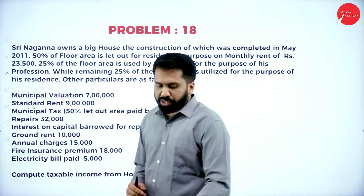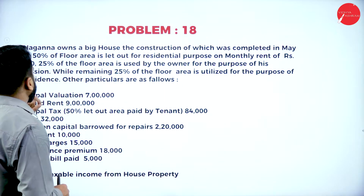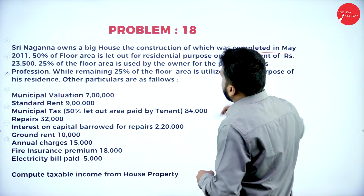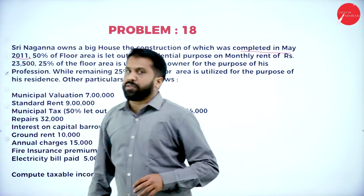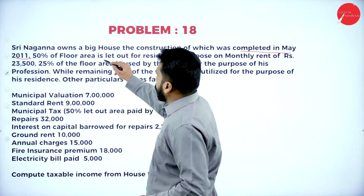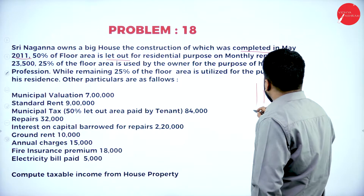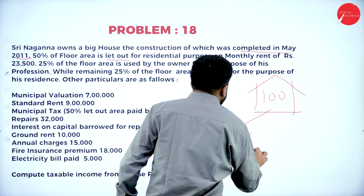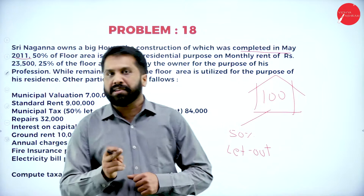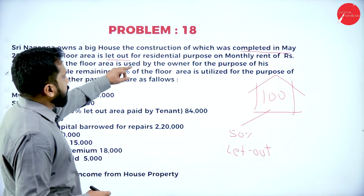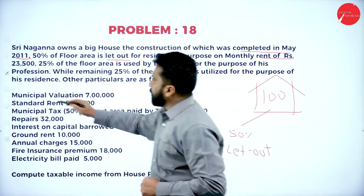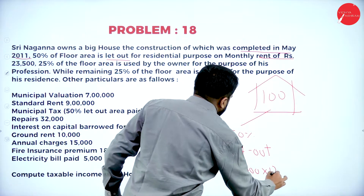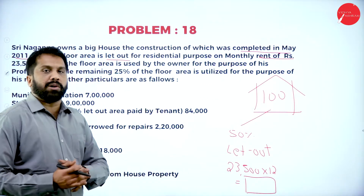Problem 18: Sri Nagana owns a big house, the construction of which was completed in May 2011. Now, 50% of the floor area is let out — meaning given on rent. The monthly rent is ₹23,500. So your annual rent is ₹23,500 multiplied by 12.